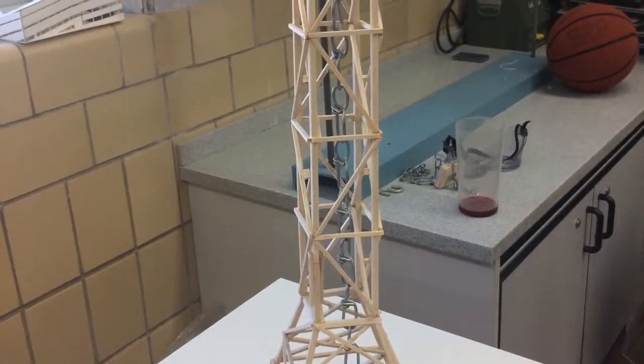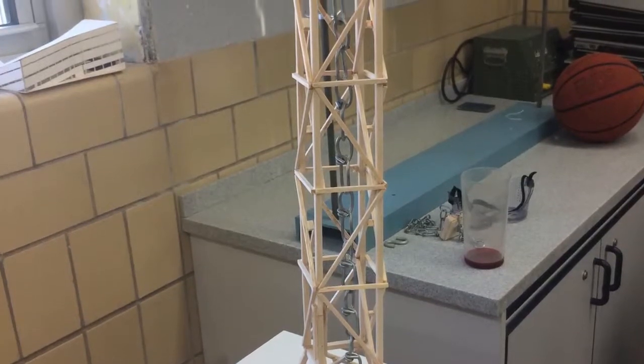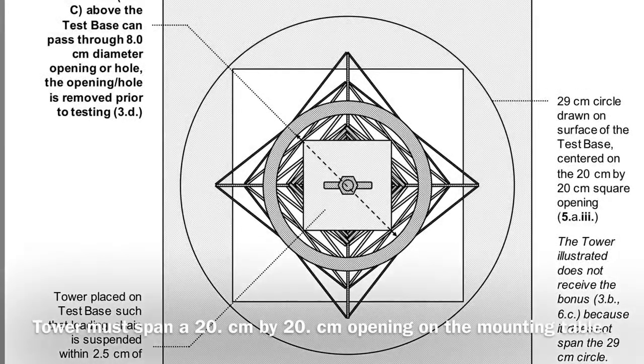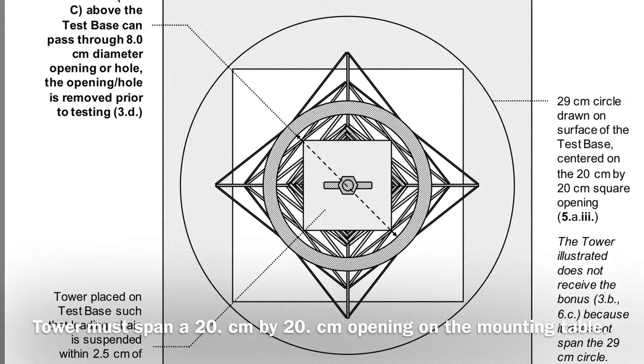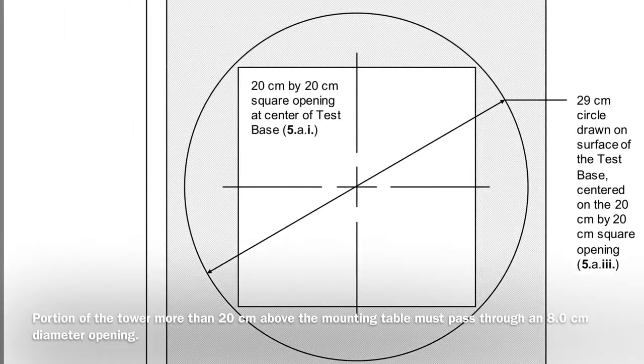The latest challenge in STEM class was to build a balsa wood tower with certain specifications to satisfy Science Olympiad rules. The first criteria was to make a tower large enough to span a 20 by 20 centimeter hole. The top portion of the tower must pass through an 8 centimeter diameter opening.